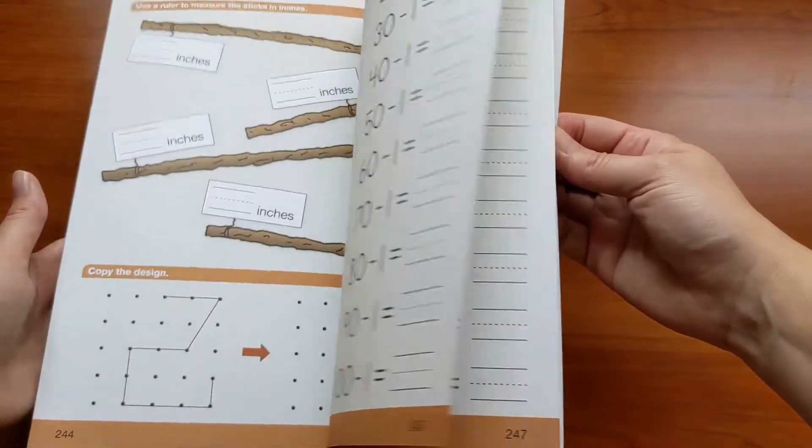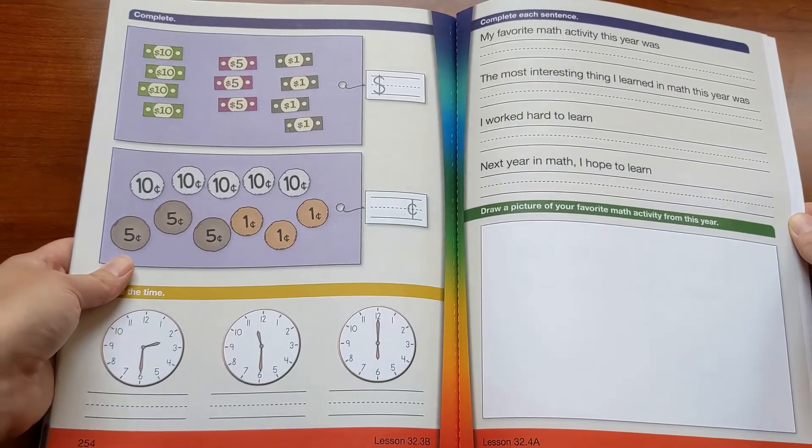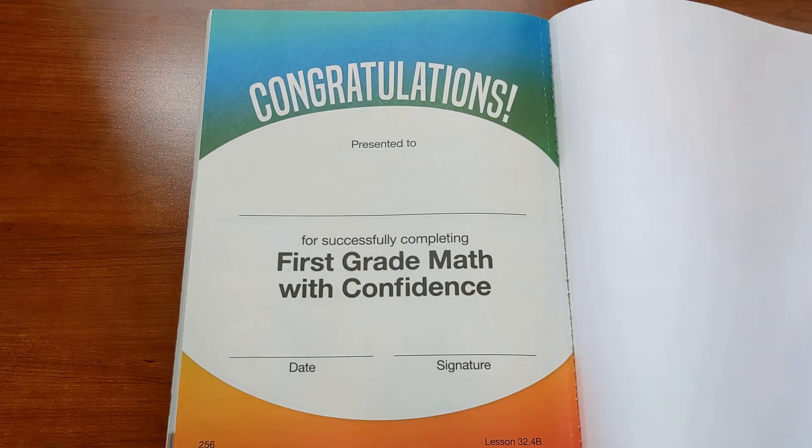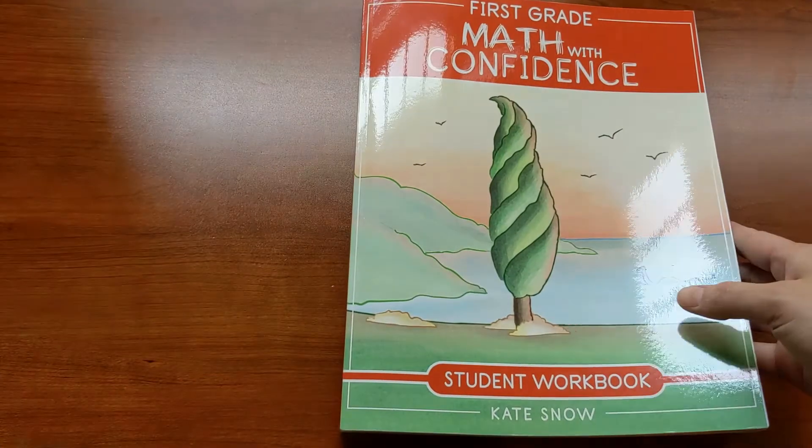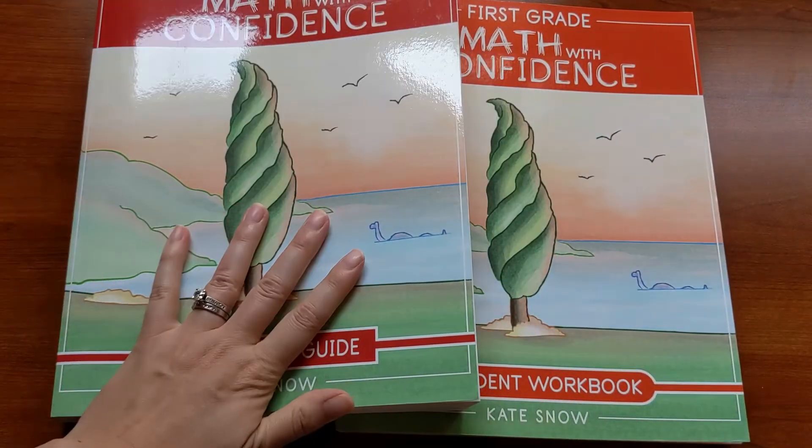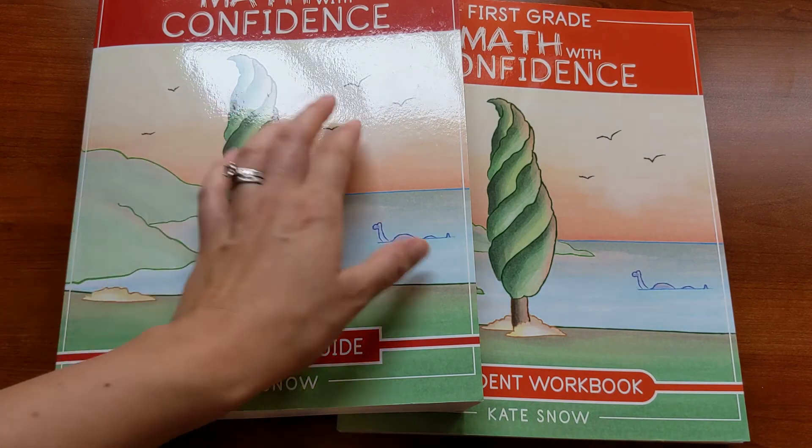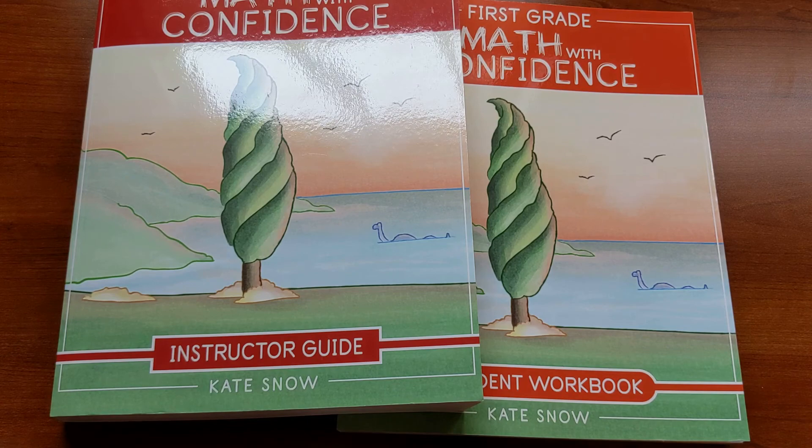And then at the end of the year, we get to a review unit and then there's a little chance to reflect on the year, and a certificate to present your child for successfully completing first grade Math with Confidence. So that's the overview and flip through of first grade Math with Confidence, the instructor guide and the student workbook. I hope that you and your first grader just have a wonderful year enjoying math together. Happy math!